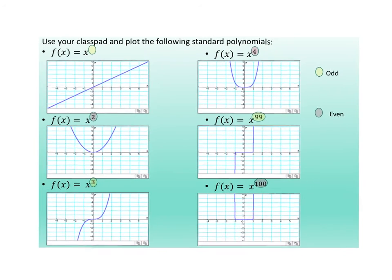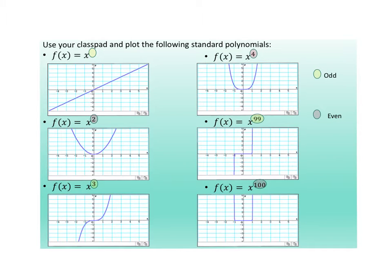When you plot using your ClassPad, plot f(x) = x, f(x) = x squared, f(x) = x cubed, x to the power of 4, x to the power of 99, and x to the power of 100. Technically speaking, if you've got x to the power of 100, the maximum number of x-intercepts you can get is 100. But if you plot it, you can see that it's sort of like a U-shape.